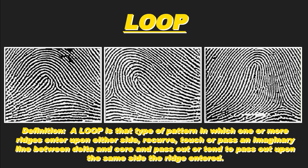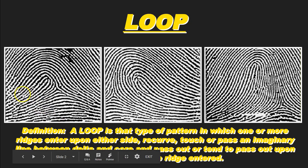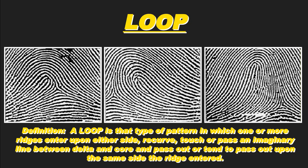In the definition of a loop, ridges can enter upon either side and then recurve. Looking at our three fingerprints, loops can come in from the left side and exit the left side — these are called left slanting loops. Or loops can come in from the right and recurve and exit the right — these are right slanting loops. In the next video, we'll talk about classifying loops as either radial or ulnar, as opposed to simply right or left slanting.